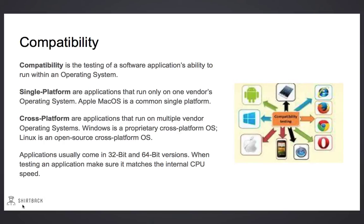Compatibility is the testing of a software application's ability to run on a certain operating system. Single-platform applications will run only on one vendor's operating system — a common example is Apple's Mac OS. Cross-platform applications will run on multiple vendor operating systems. Windows is a common proprietary cross-platform operating system, and applications can run on different versions of Windows.